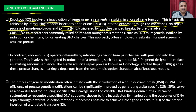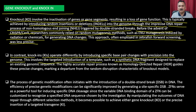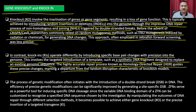This is typically achieved by introducing random insertions or deletions into the genome through the imprecise DNA repair process of non-homologous end joining (NHEJ), targeted by double-strand breaks. Before the advent of CRISPR-Cas9, researchers commonly relied on random mutagenesis methods such as ENU mutagenesis induced by radiation or chemicals. In contrast, knock-ins introduce specific base pair changes with precision into the genome.